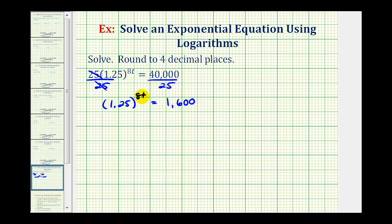Now to solve for t, we want to move 8t out of the position of the exponent. To do this, we can take the common log or natural log of both sides of the equation. We need to use common log or natural log because we are going to have to use the calculator. Let's go ahead and take the natural log of both sides of the equation. So we'd have natural log of 1.25 raised to the power of 8t equals natural log 1,600.